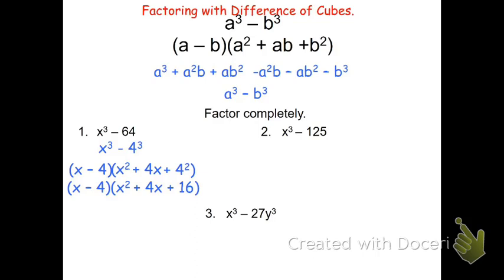On number two, again I see x³, but -125 doesn't show me something cubed. So I've got to rewrite 125 as something cubed. Well, I know that 5³ is 125. Take a moment, try to work this problem out before I tell you how to do it.